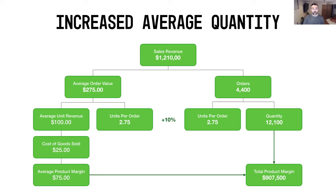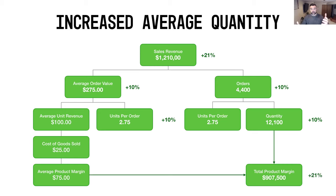Now let's look at a scenario where we add 10% growth on units per order and also layer in 10% growth on the orders side of the equation. When you stack the 10% on average order value with the 10% on orders, you start to see the compounding effect: units sold go up 10%, but top-line sales revenue takes the combined effect — 10% on average order value plus 10% on orders — to become 21% growth on sales revenue. Total product margin also increases by 21%, showing that units per order is one of the most impactful levers in your e-commerce product margin tree.